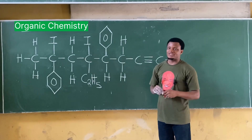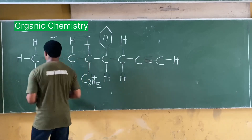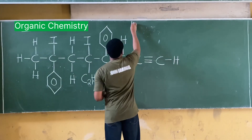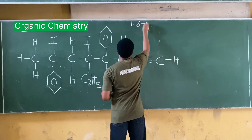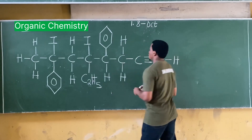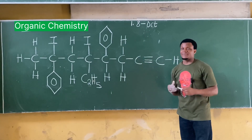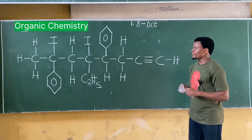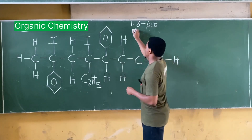Between seven, six, and eight, obviously eight is the longest continuous carbon chain. Eight is given by 'oct', so the root is called 'oct'. That's the first rule. The second rule is to identify the functional group.